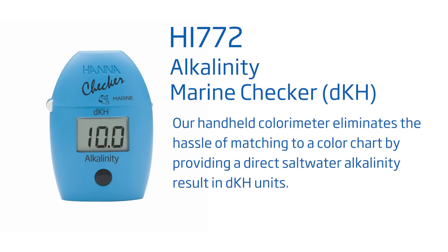When we measure alkalinity, we use our HI-772 DKH alkalinity checker. This is a handheld colorimeter that uses light to measure absorbance rather than you matching colors to a chart. The nice thing about these is there are no drops to count, there are no colors to match — it's a really fast, easy, accurate, and precise way to measure alkalinity in your reef tank.